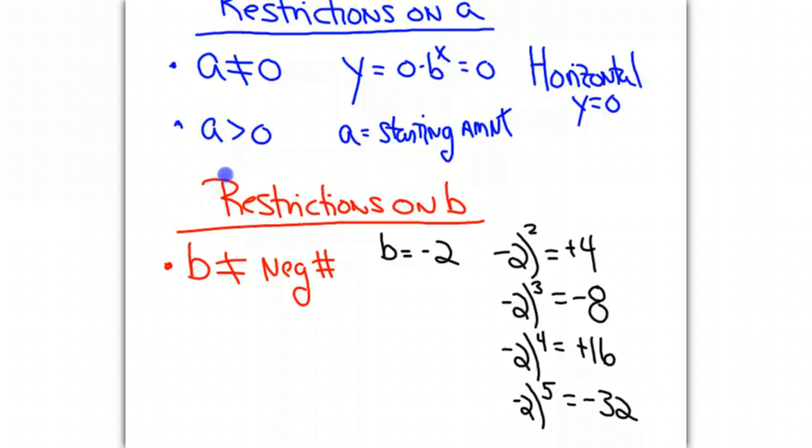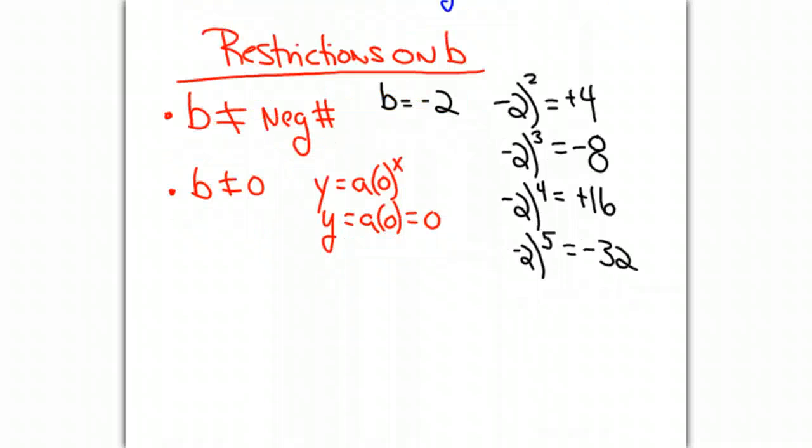Similarly to a, b cannot equal 0. Because if we let b equal 0, then y would equal a times 0 to the x, which is going to give us a times 0, which will give us another horizontal line. So b cannot equal 0.